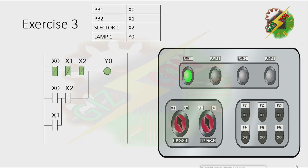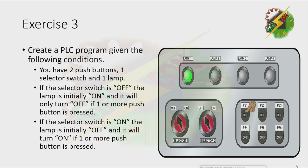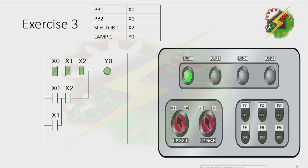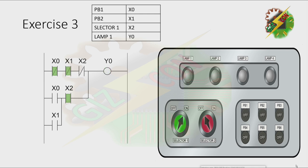Here is the answer: the lamp is initially on. When I press push button 1, lamp 1 turns off. When I press PB2, lamp 1 turns off also. When we press both push buttons, lamp 1 turns off as well. That's how we solve Exercise 3. Now let's go to Exercise 4.